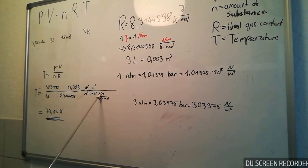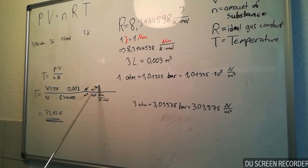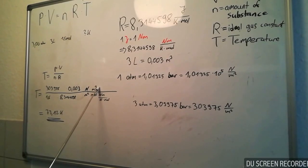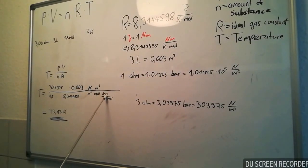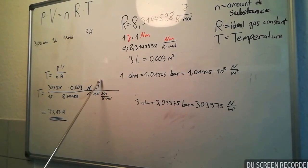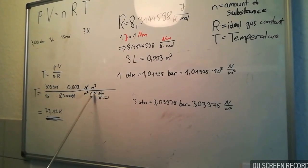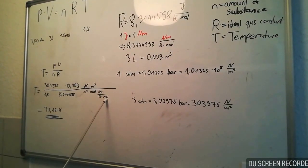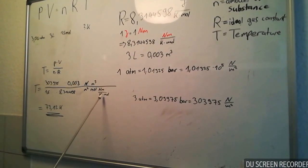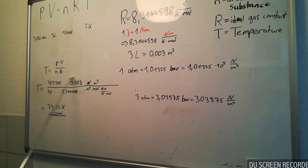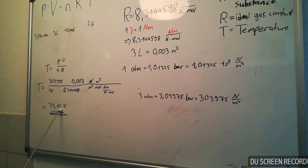Newton divided through newton cancels. We have cubic meter divided by square meter multiplied with meter. So, we have cubic meter divided through cubic meter, and mole divided by mole. And what remains is kelvin. So, if you multiply this, you have 33.12 kelvin.